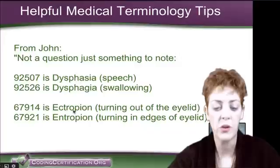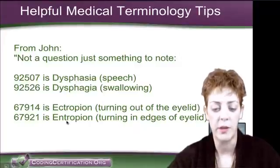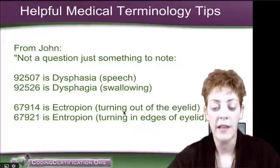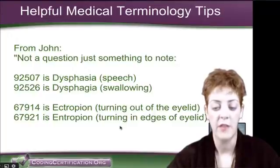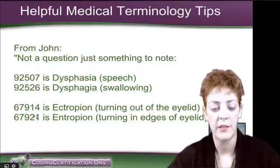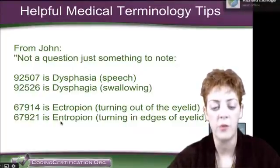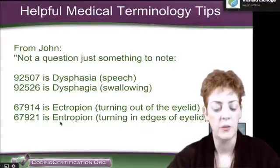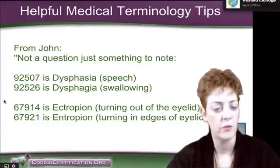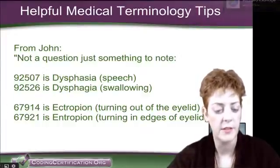And then ectropion versus entropion — the turning out of the eyelid versus the turning in of the eyelid. The codes there are 67914 versus 67921. So thank you for sharing, it was very nice.